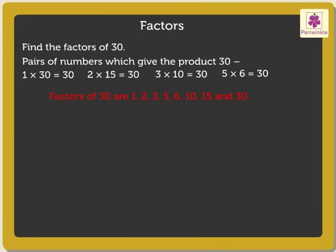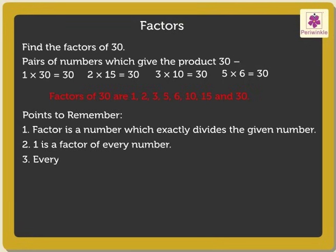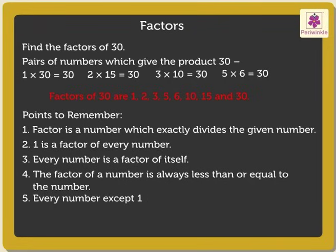Now, look at these factors and remember these points. 1. A factor of a number exactly divides that number. 2. 1 is a factor of every number. 3. Every number is a factor of itself. 4. The factor of a number is always less than or equal to the number. 5. Every number except 1 has at least 2 factors: 1 and the number itself.